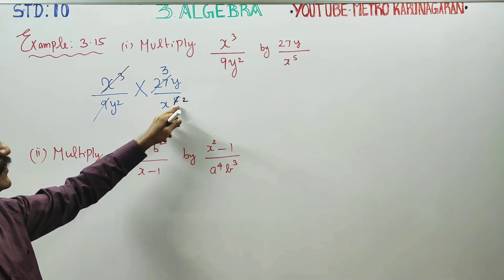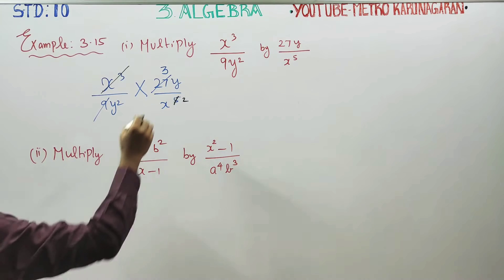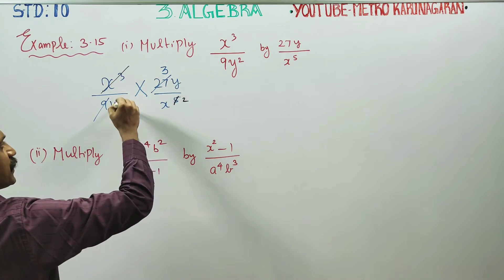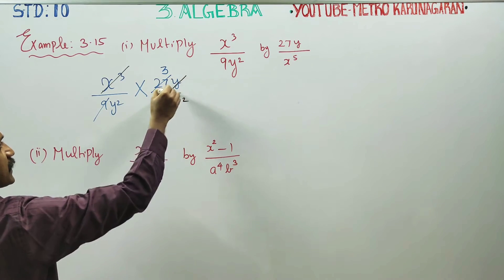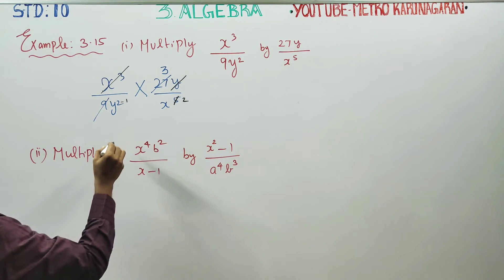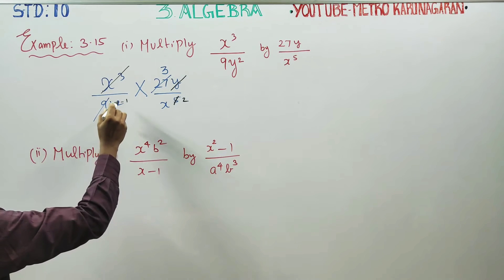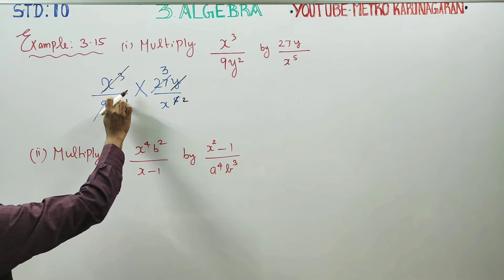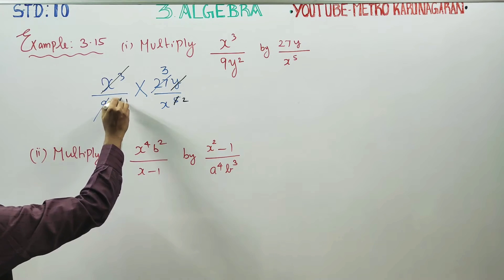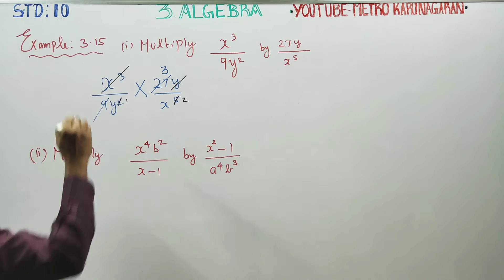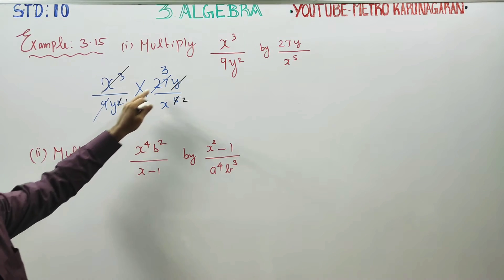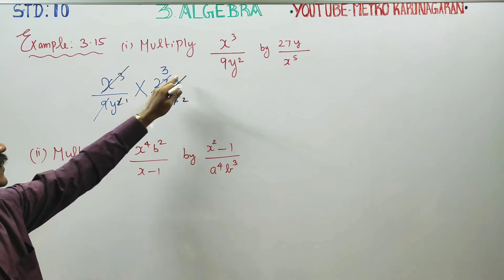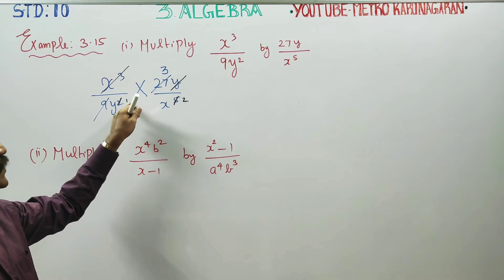Now divide the y powers. y power 1 is in the numerator and y power 2 is in the denominator — that is the smaller power versus the larger power. Subtracting: 2 minus 1 equals 1, so y power 1 remains in the denominator after cancellation.